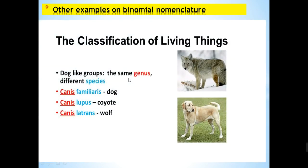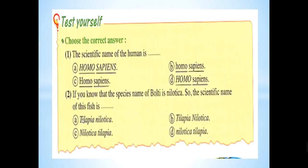Another example of binomial nomenclature: we discussed the dog. Here are more examples — the coyote and the wolf. The first word refers to the genus and the second to the species. It appears the coyote and wolf share the same genus but belong to different species.